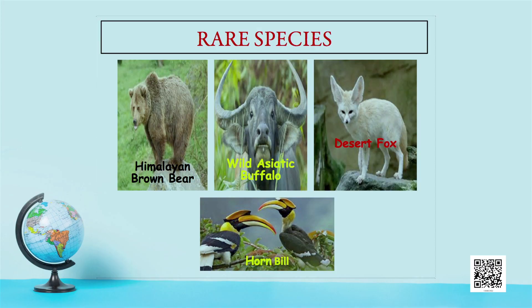Rare means unusual, uncommon, out of the ordinary — and thus has special value. Rare species have small populations. Examples include the Himalayan brown bear, Indian wild Asiatic buffalo, desert fox, and hornbill. The hornbill is a beautiful bird with a special place in Naga culture.